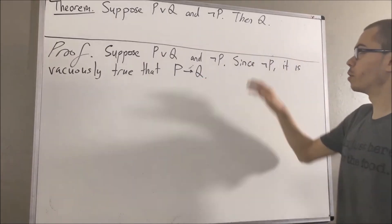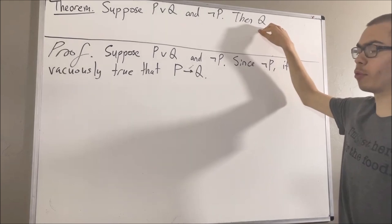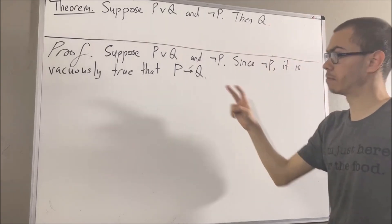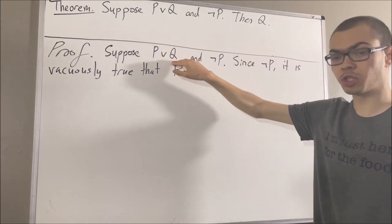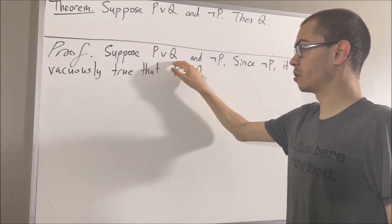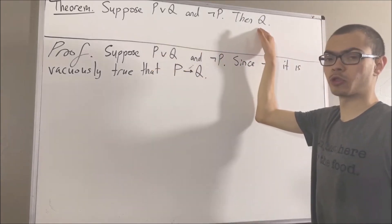Now we're going to prove that Q is true by breaking this up into two cases. Either P is true or Q is true, and in either case, we're going to prove that Q must be true.